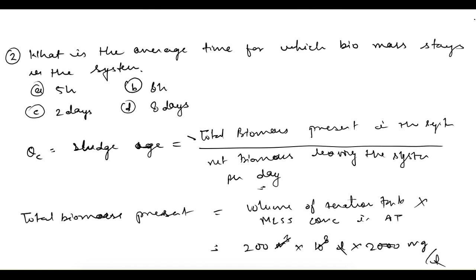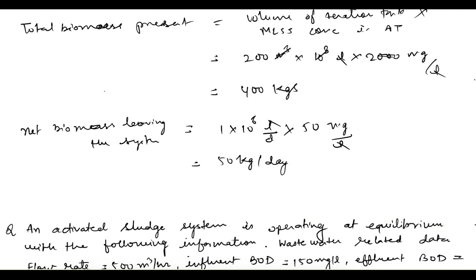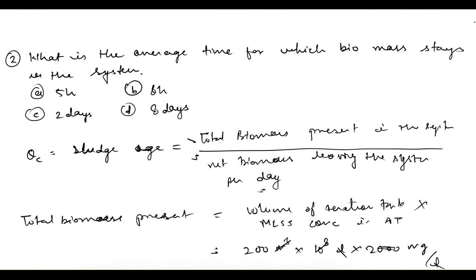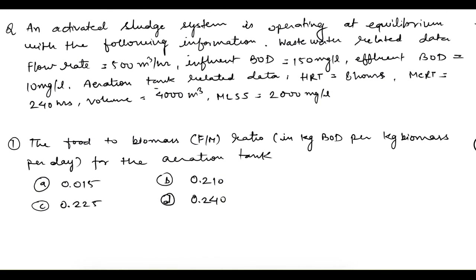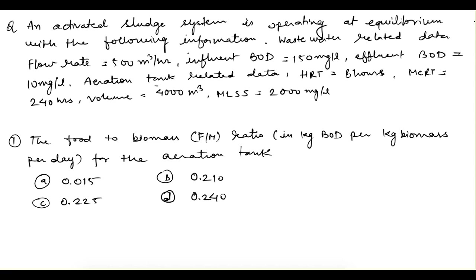So θc = 400 kg / 50 kg/day = 8 days. Both 8 hours and 8 days are given as options, so be careful with units. 8 days is the correct answer.